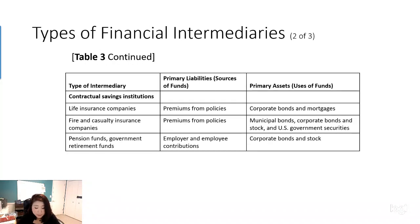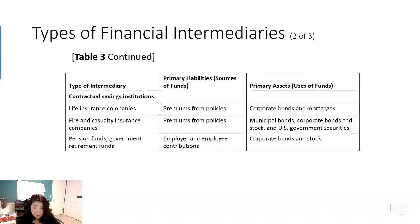The second type of financial intermediary is called contractual saving institutions, such as life insurance, fire and casualty insurance, and pension and government retirement funds. They acquire funds through premiums on policies. Compared with depository institutions, contractual saving institutions don't need to worry about liquidity, because the premiums you pay generally won't come back to you unless you have an accident. Since they know they'll have funds for a long time, they usually invest in the capital market — purchasing corporate bonds, mortgages, municipal bonds, and stocks.